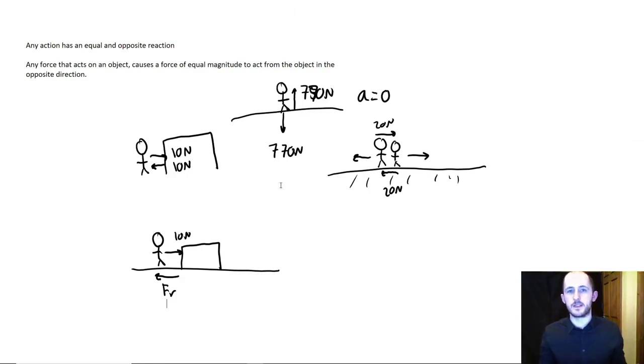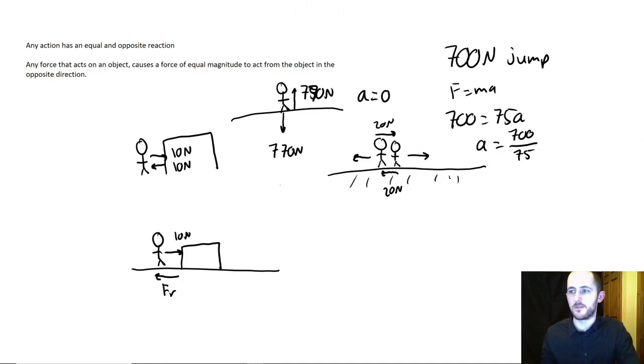So why is it two different forces? Well, let's say I can jump pretty well. Now, let's say that is a 700 Newton jump. So if I put this into F equals MA, for me, 700 Newtons equals, again, I weigh approximately 75 kilograms times A. So A would equal 700 over 75. For now, let's say that that is 10 meters per second squared. So I'd accelerate upwards at 10 meters per second squared.